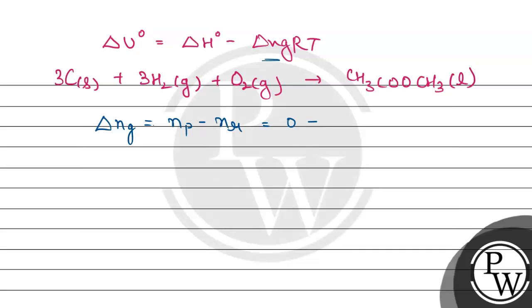In the reactant side, gaseous reactants are hydrogen and oxygen only; carbon is solid. Three hydrogen and one oxygen, so it will be 3 + 1. Zero minus four, we get minus four moles.